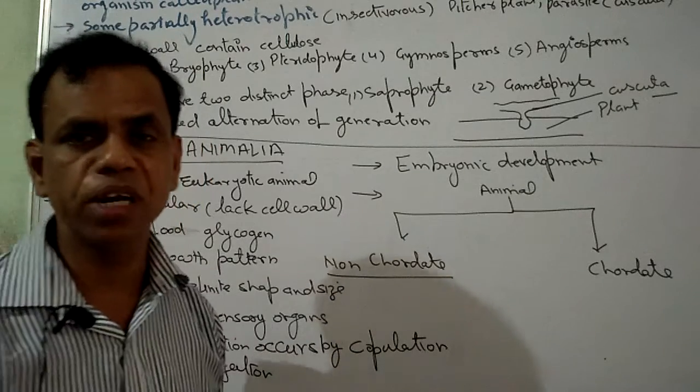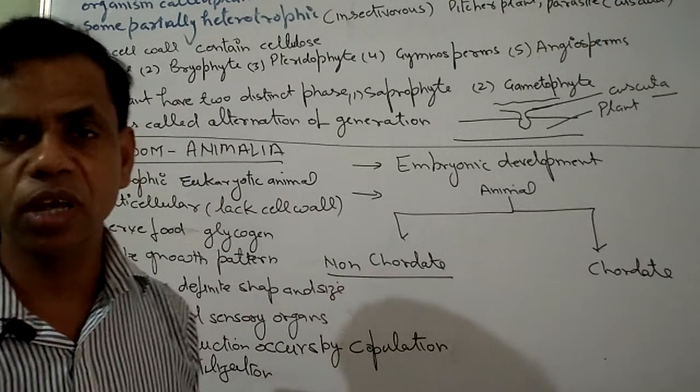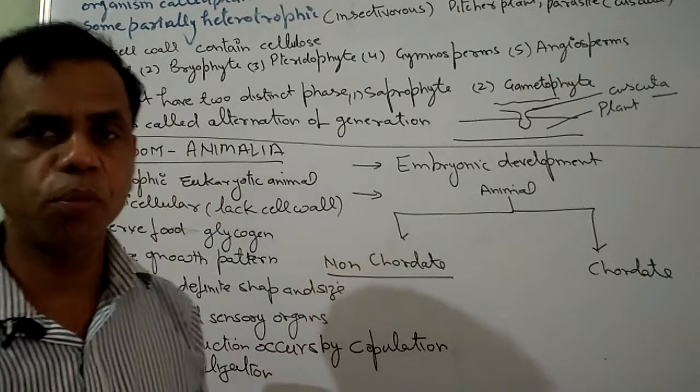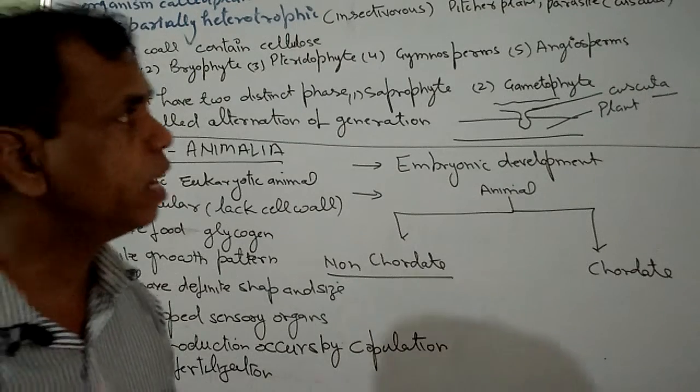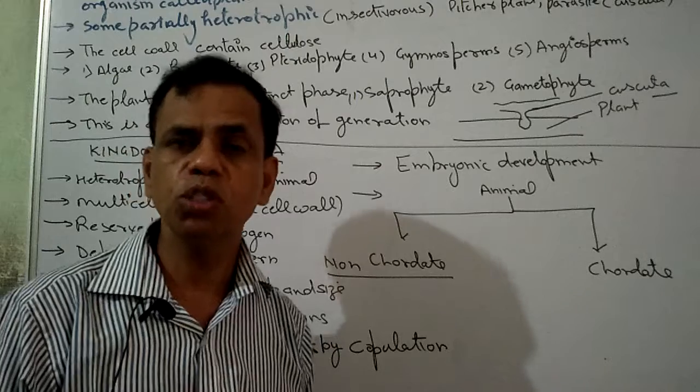These two plants are heterotrophic, like the insectivorous plants, which are capable of killing insects. Parasitic plants are parasitic on living host plants.